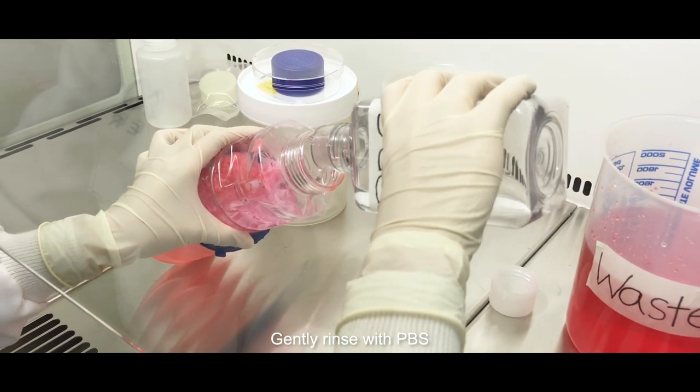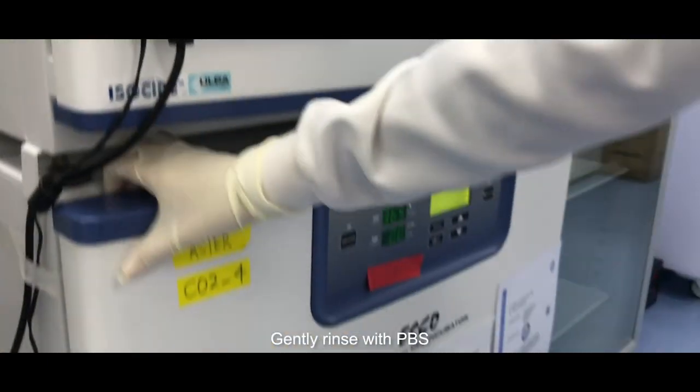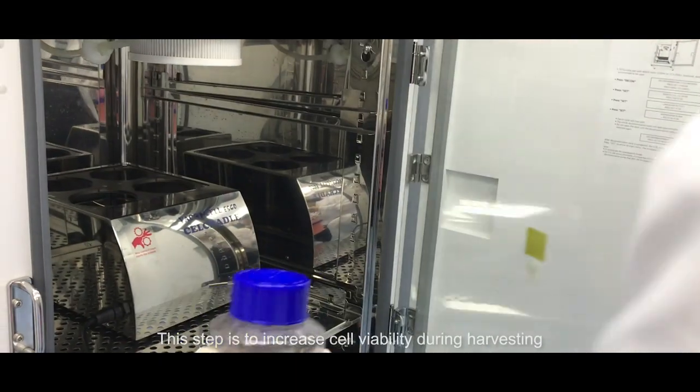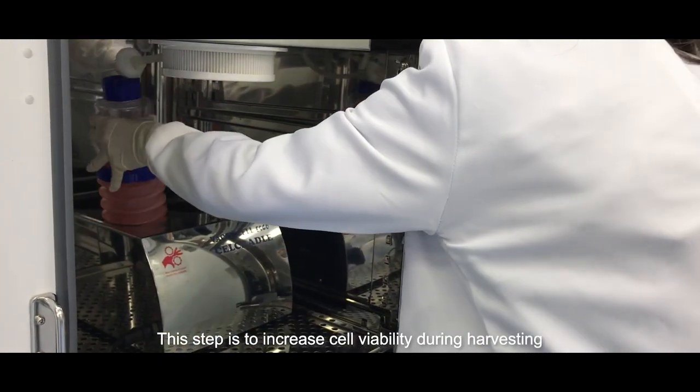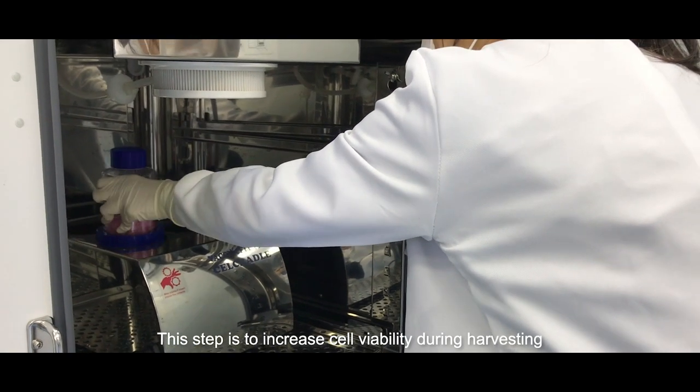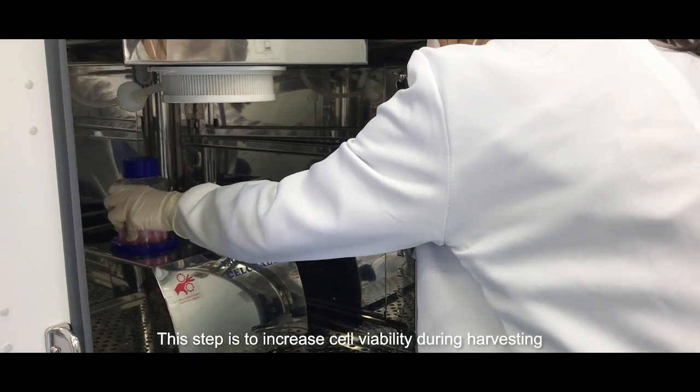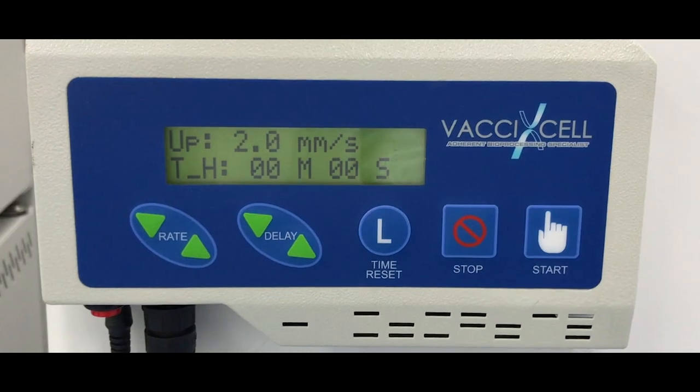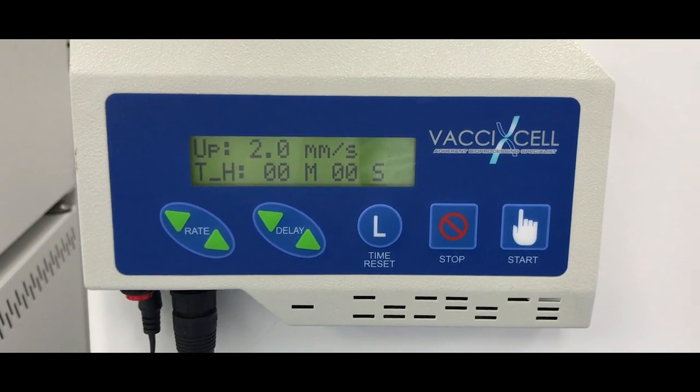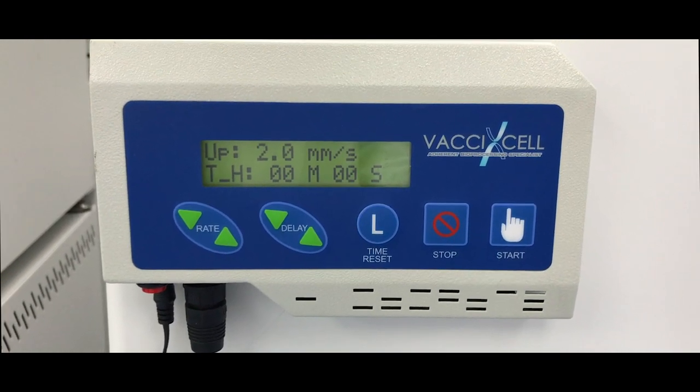Next, set the following parameters. Gentle rinsing of cells ensures that only the serum and non-viable cells are washed off. This step is to increase cell viability during harvesting. The speed for the up and down rate should be set at 2.0 millimeters per second and the top and down holding time should be set at 0 millimeters per second.